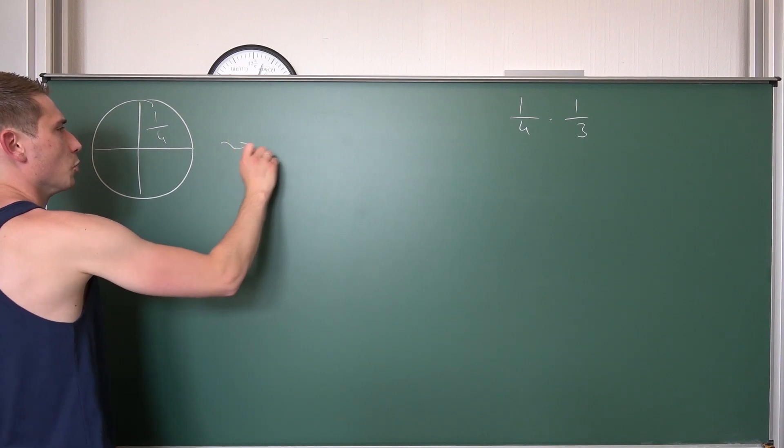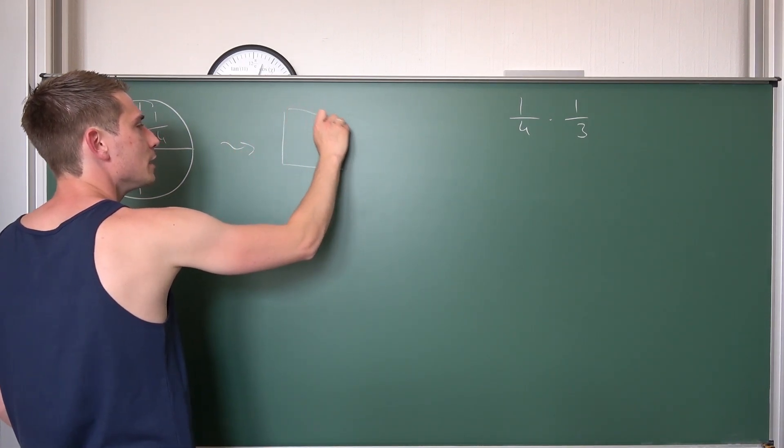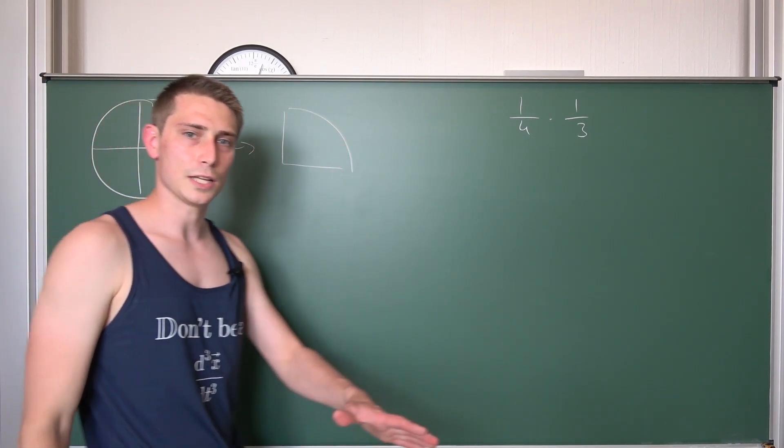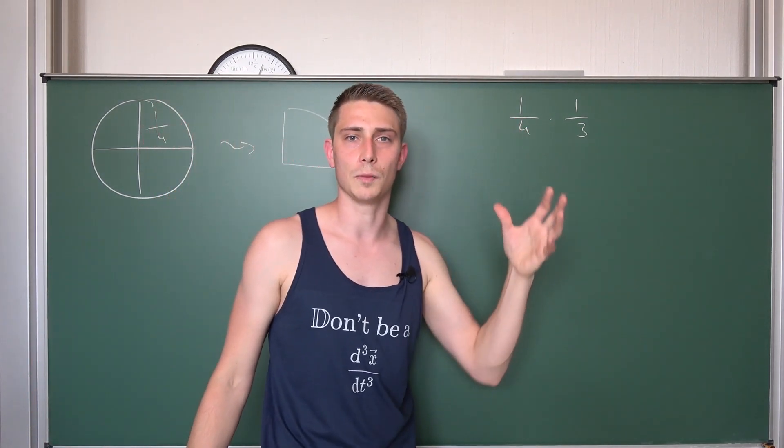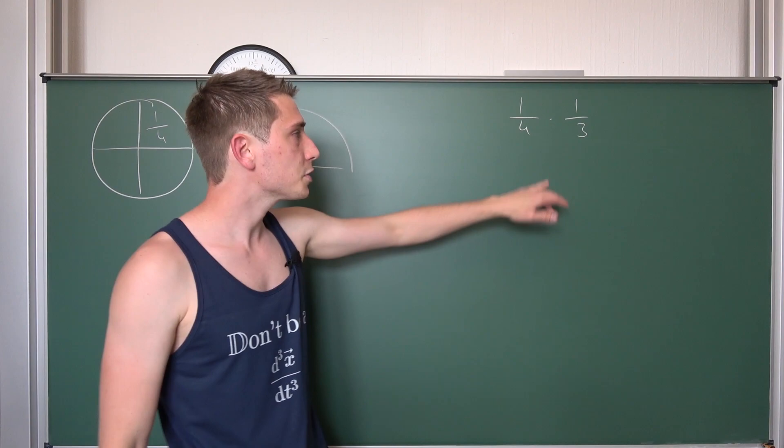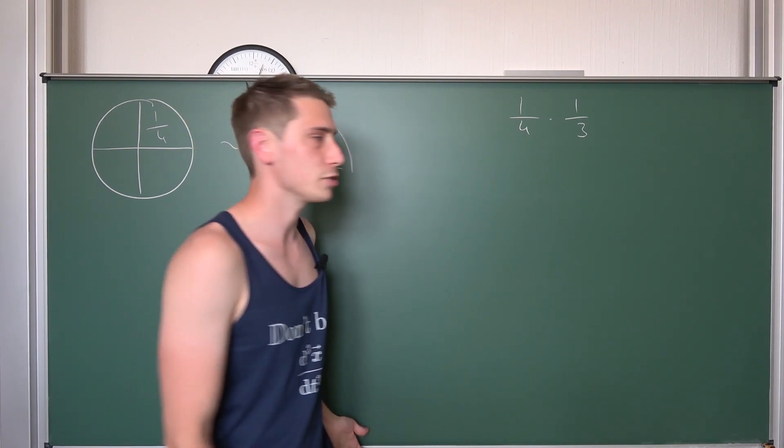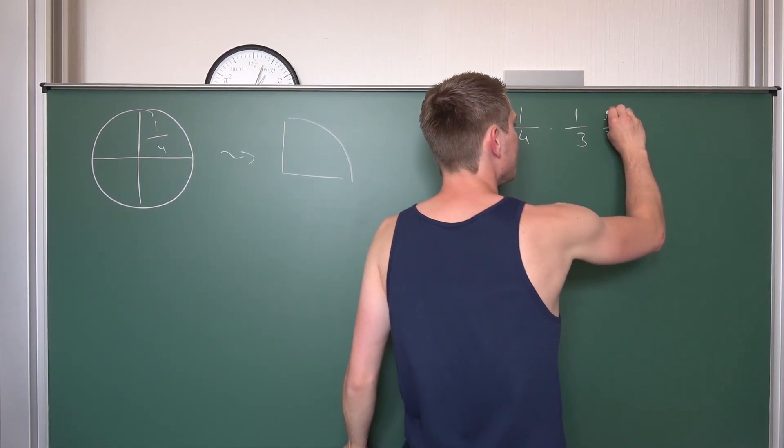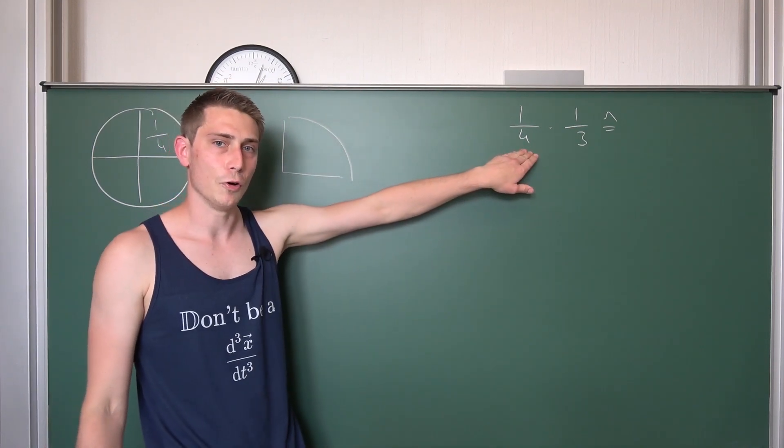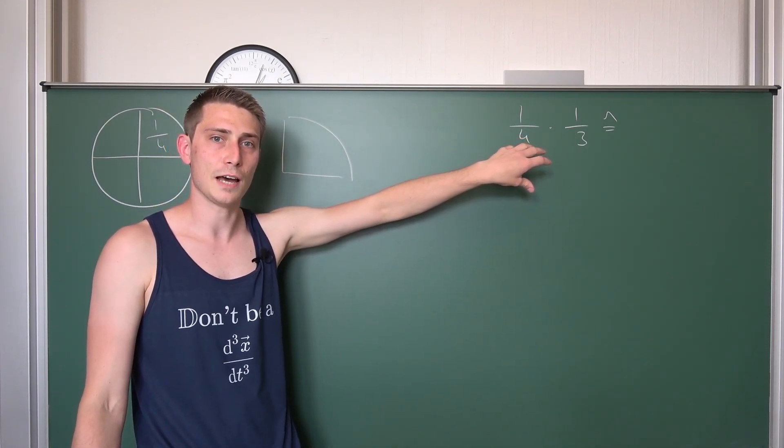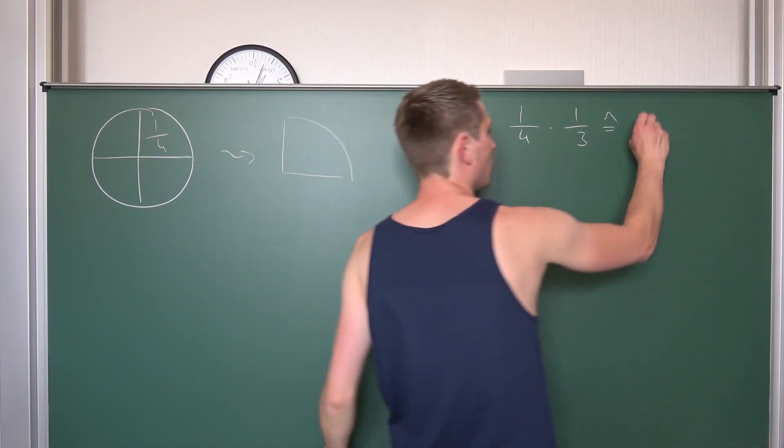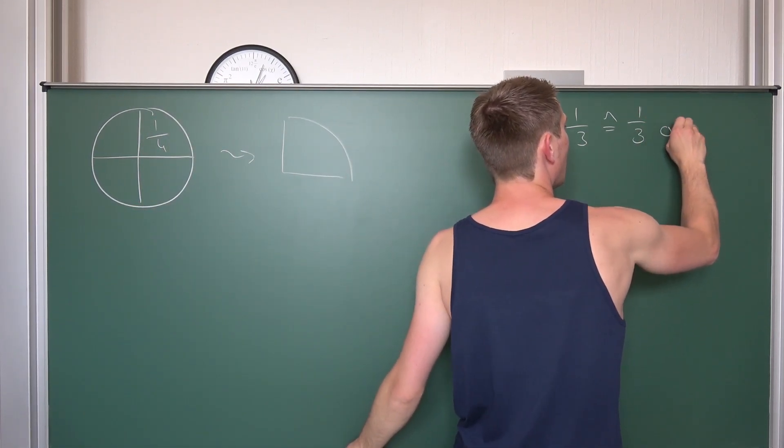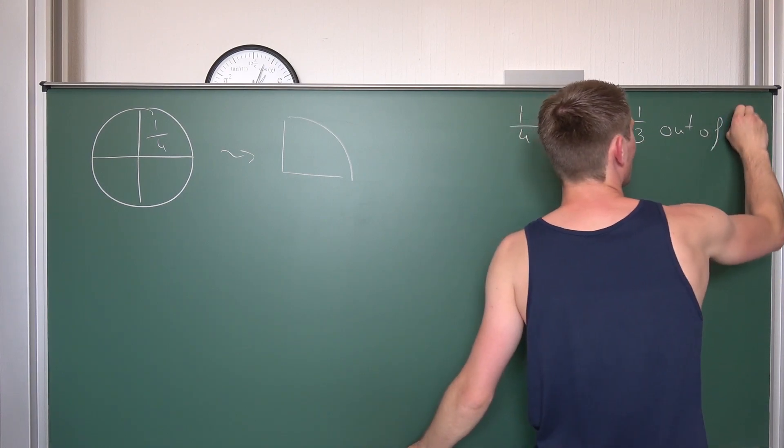We are going to take our one quarter, put it here. And now I'm going to tell you about my secret that I always tell students also when talking about percentages. You can translate the multiplication here into English language. Namely, one third times one quarter is nothing but one third out of one quarter.